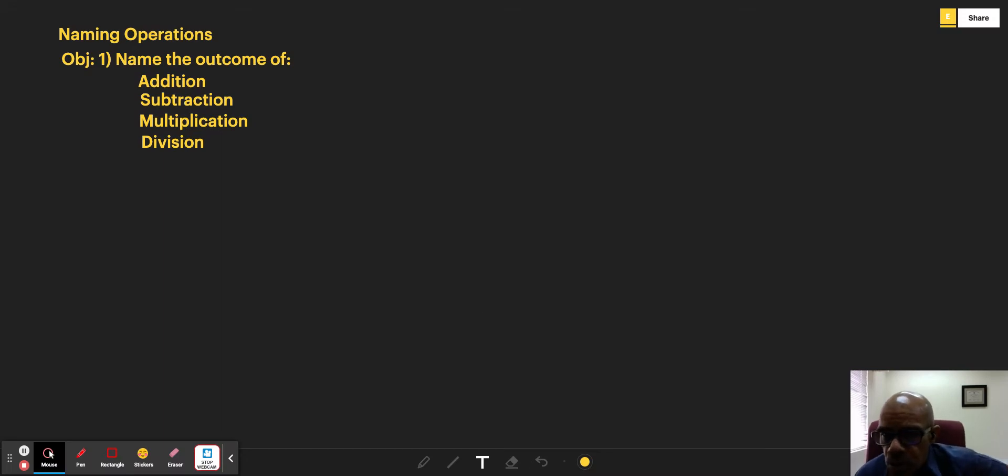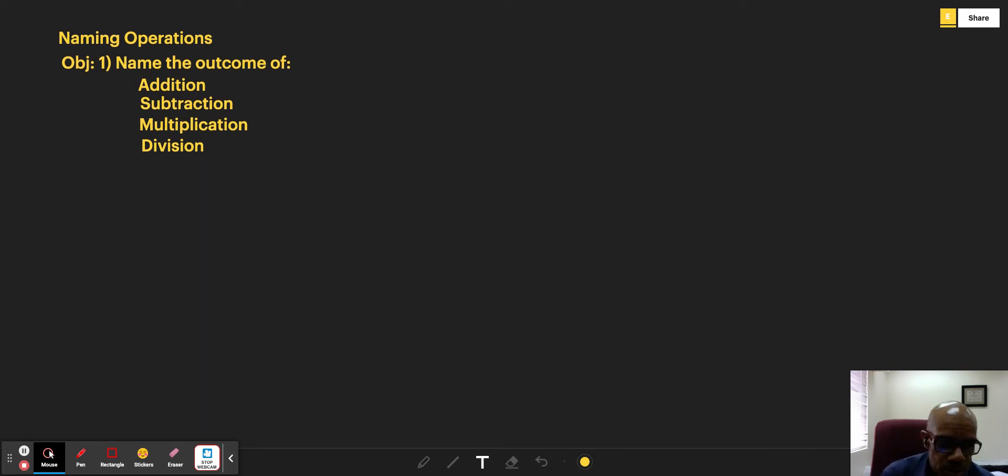Hello again, in this video we're going to look at how we name operations. This is a straightforward video. We're simply going to talk about how we call the outcome of each operation. For addition, the outcome of addition is a sum.